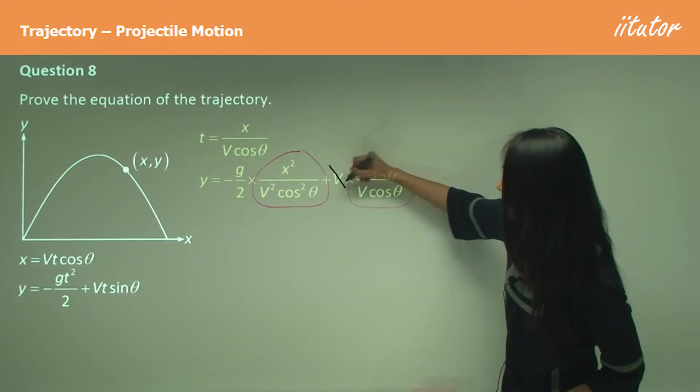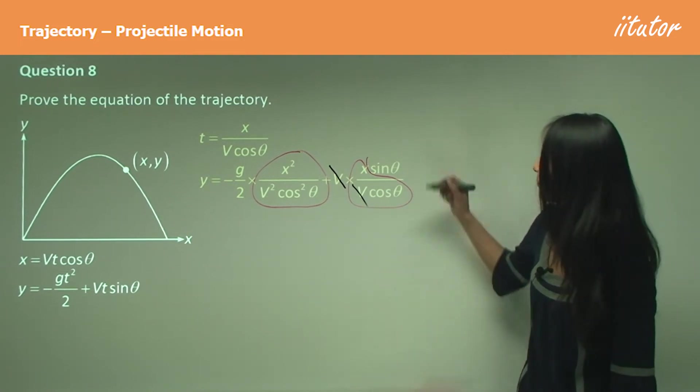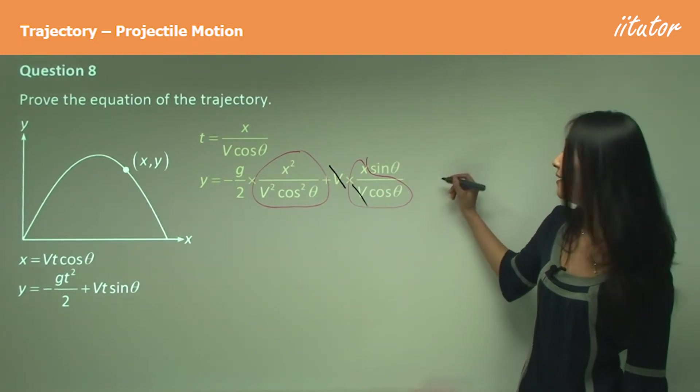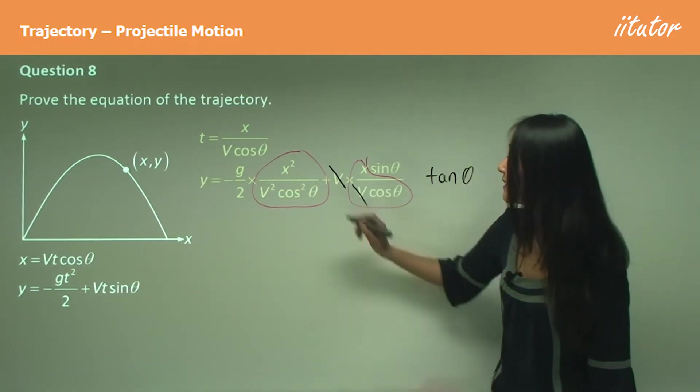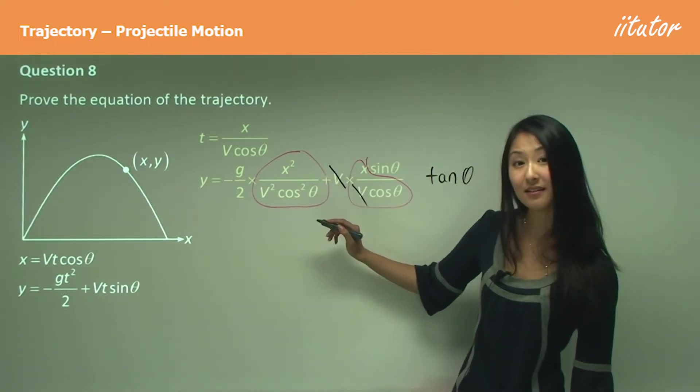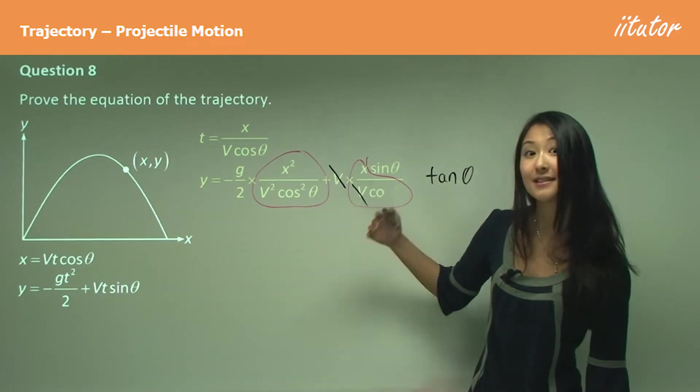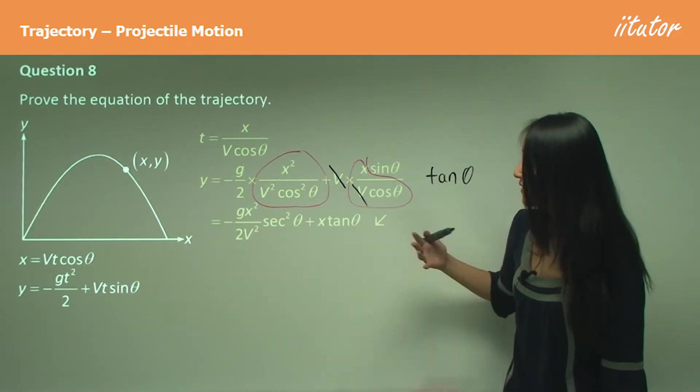Whereas here we have 1 over cos squared θ, so that should give you sec squared θ. That's why it becomes negative g x squared over 2 times v squared sec squared θ.